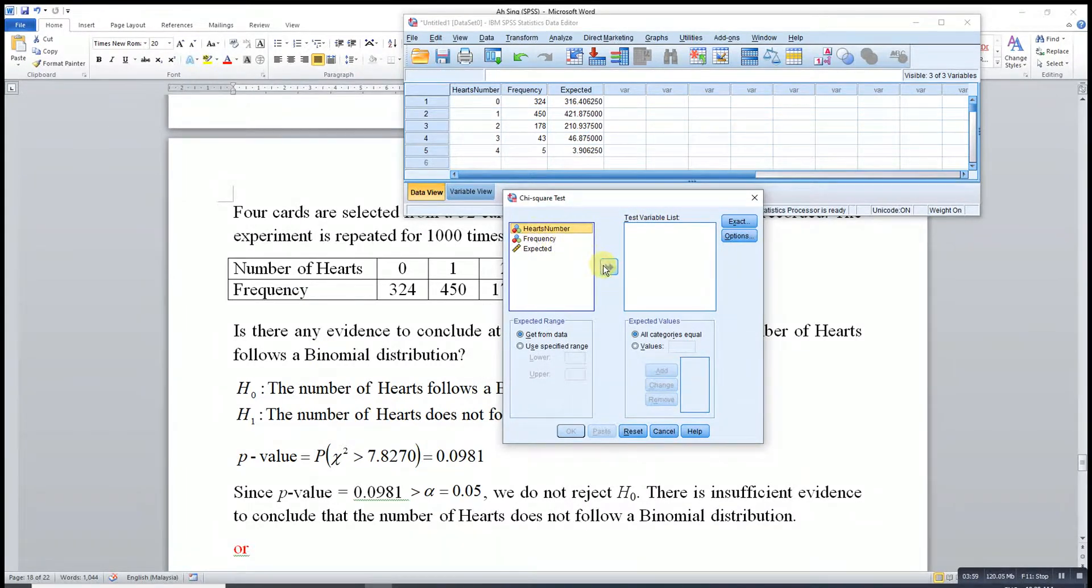The test variable is the heart number. And then we enter the expected values which we just computed according to this list. We have to bear in mind the order must be correct.